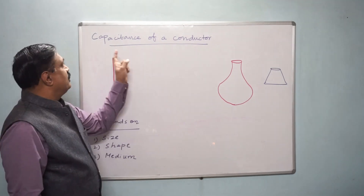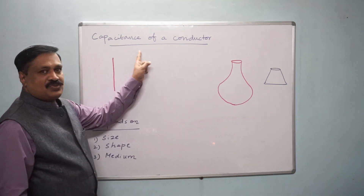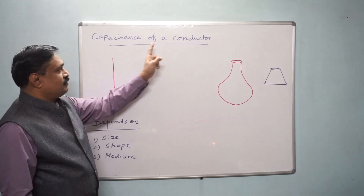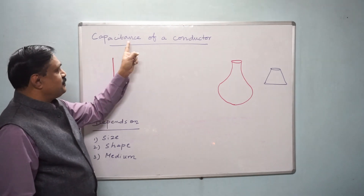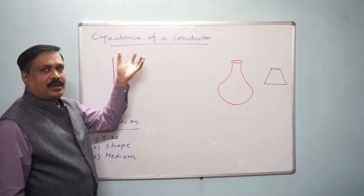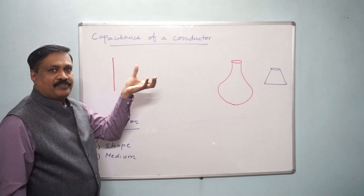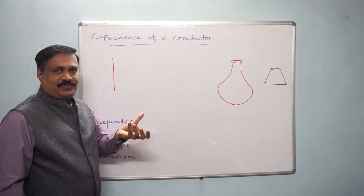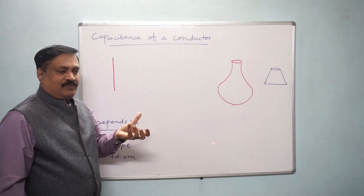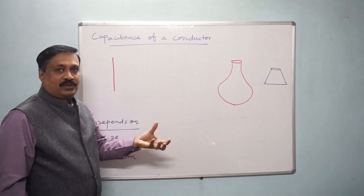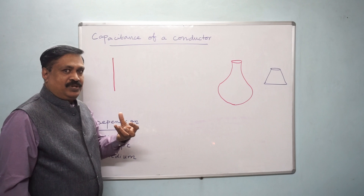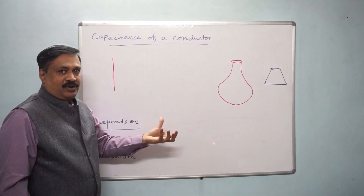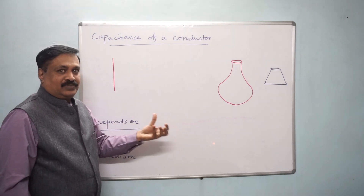Today we are going to see capacitance of a conductor. What is known by capacitance? It is just a capacity. We know the meaning for the capacity — whether he has a capacity to do the work, whether we can give that job or not. That is the capacity.